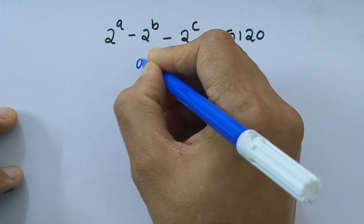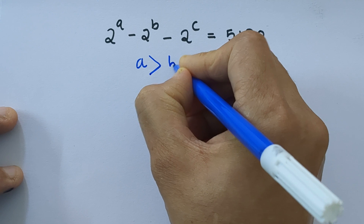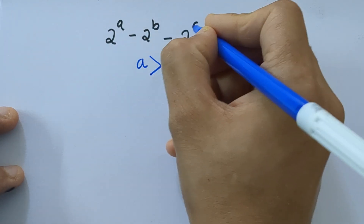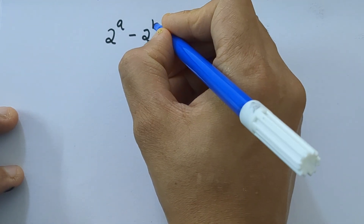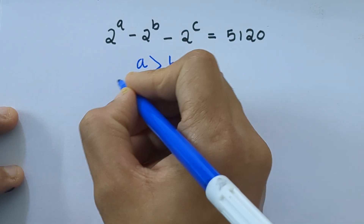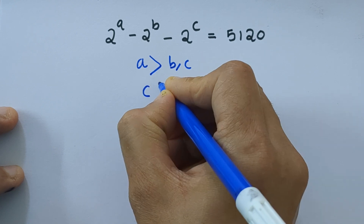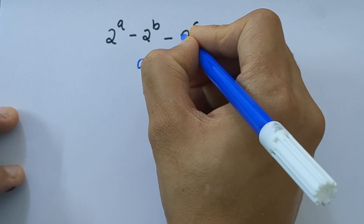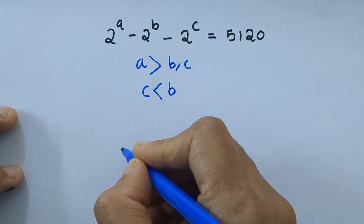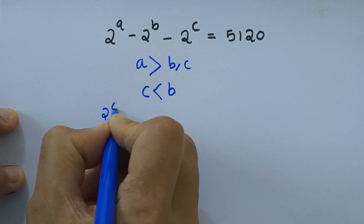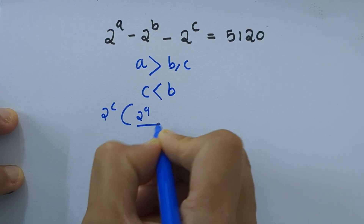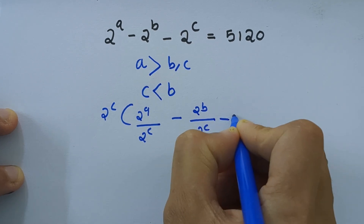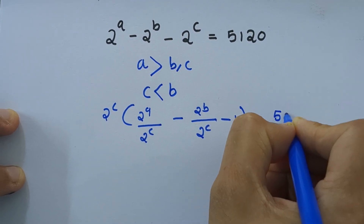So exponent a is greater than b and c. We can solve this equation by assuming among b and c, let us take c as the smallest one, so c is less than b. We can take 2 raised to c outside, giving us 2 raised to c into 2 raised to a divided by 2 raised to c minus 2 raised to b divided by 2 raised to c minus 1, equal to 5120.